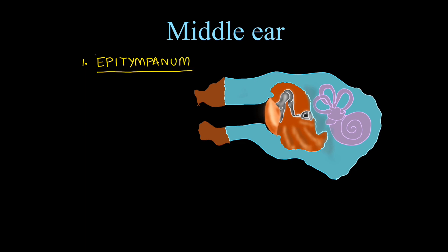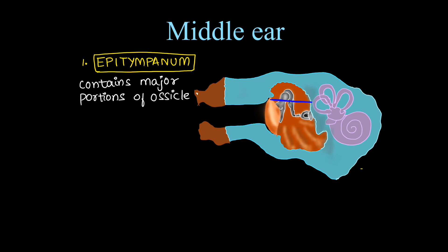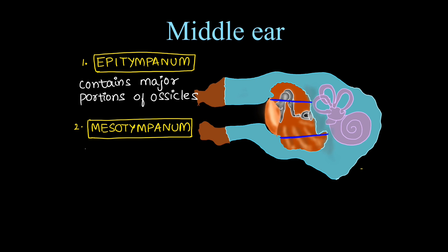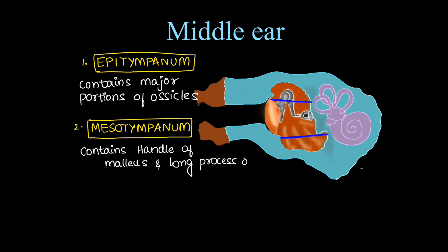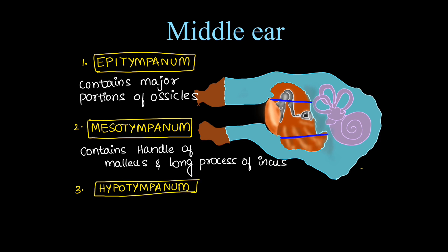Now let's move on to the middle ear. The parts of the middle ear are: the epitympanum, which lies above the attachment of the tympanic membrane and mainly contains the major portions of the middle ear ossicles; the mesotympanum, extending from superior to inferior attachment of the tympanic membrane, containing the handle of malleus and long process of incus; and the hypotympanum, which extends below the inferior attachment of the tympanic membrane and contains no major structures — just air.